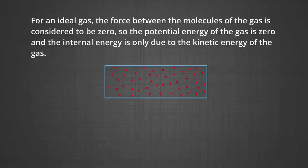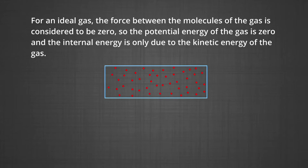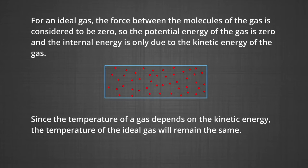For an ideal gas, the force between the molecules is considered to be zero. So the potential energy of the gas is zero and the kinetic energy is the internal energy of the gas. A constant internal energy therefore implies constant kinetic energy. Since temperature depends on kinetic energy, the temperature of the ideal gas will remain the same.